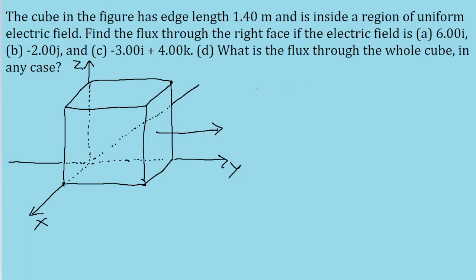Now recall the electric flux is equal to the dot product of the electric field strength with the area vector of the surface. So for each part of this problem we'll have to take the dot product of whichever electric field formula we have and dot that with the area vector, which we might as well figure out first.